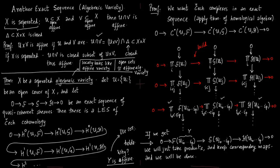Now we can use Corollary 2.6: we use Y as an affine algebraic variety, and since 0 → F → G → H is an exact sequence of quasi-coherent sheaves, there is an exact sequence of global sections. That is precisely what we are using here.